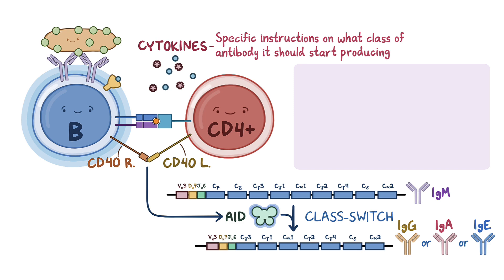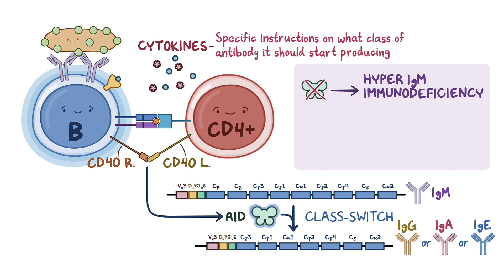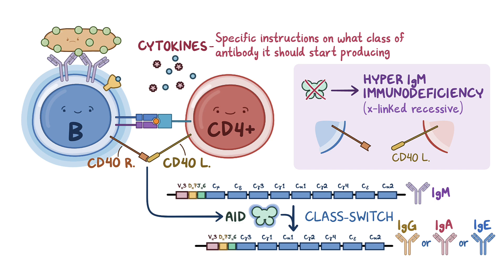Because of the role that AID plays in class switching, people who lack AID suffer from a condition known as hyper-IgM immunodeficiency, where they have a hard time making antibodies other than IgM. The most common cause of this condition is an X-linked recessive genetic defect of the CD40 ligand that leaves helper T cells incapable of binding CD40 receptors on B cells.